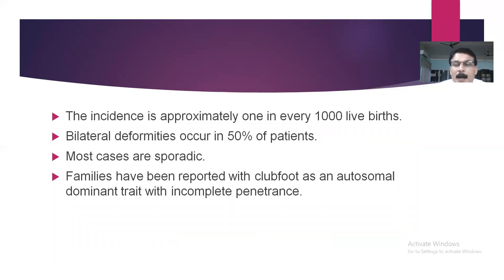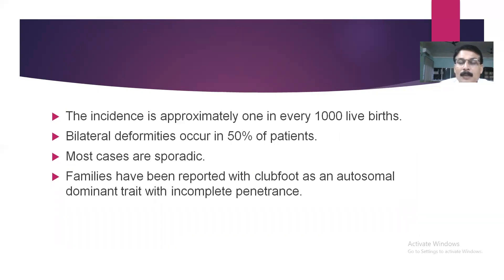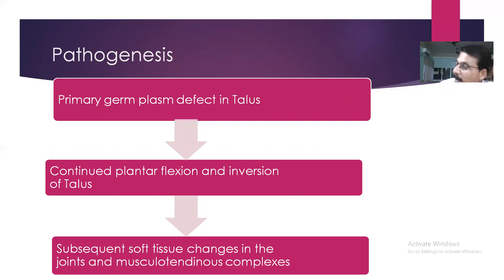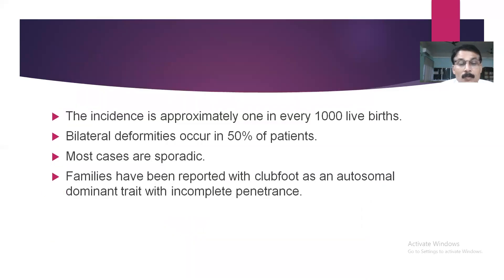Regarding incidence, this is not uncommon — it occurs in almost one in one thousand live births. Bilateral deformity is seen in almost 50% of cases. Most cases are sporadic, but it may also run in families. There is evidence of autosomal dominant inheritance with incomplete penetrance, which is why it can run in families.